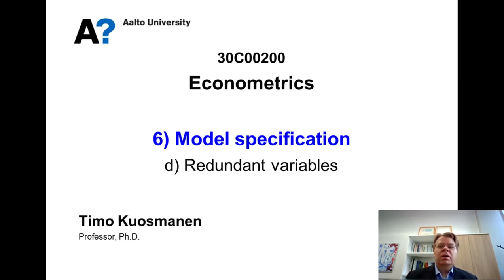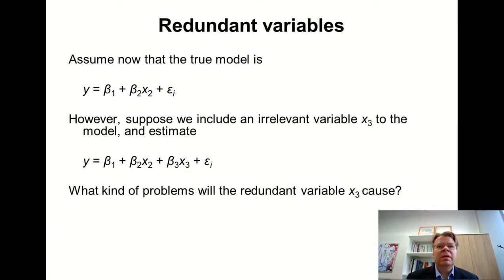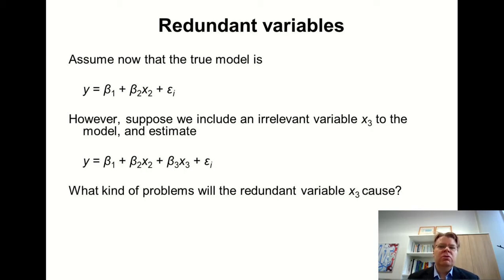I will focus on the simplest thinkable cases. Let us assume that the true model is just a single regression model where y depends on x2. However, in our empirical modeling, we are not sure whether there should also be an additional variable x3. So to be on the safe side, we decide to also include x3 in our model, even though in fact x3 has no impact on y.